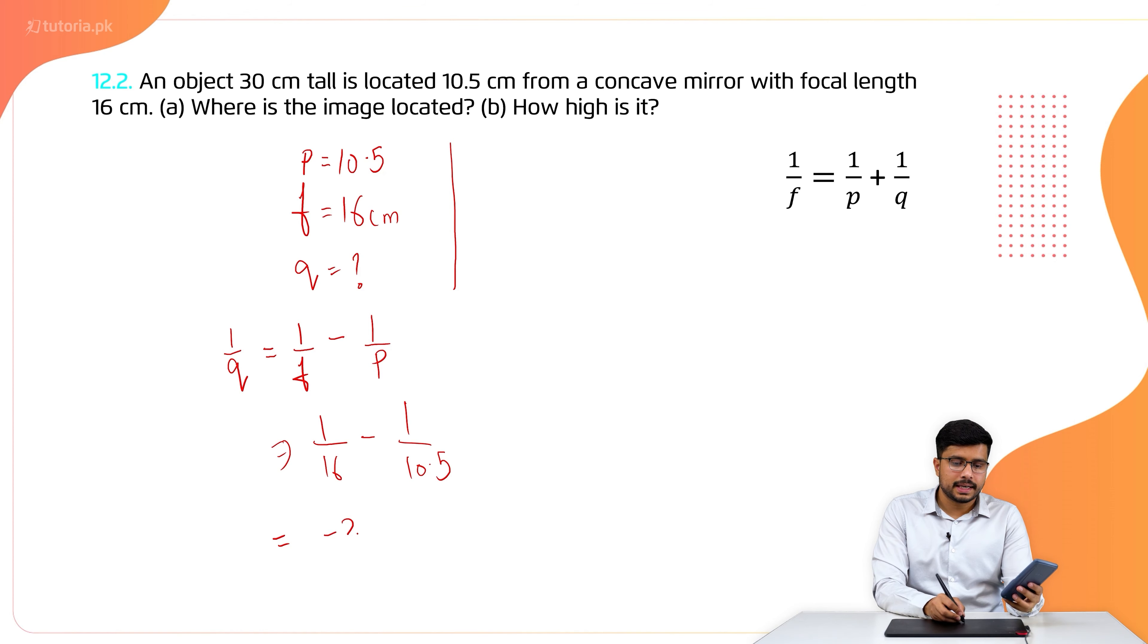If we have object distance and focal length, we will easily find image distance. In addition, I over O is equal to Q over P. If we know the object distance, we will easily find the height of the image.